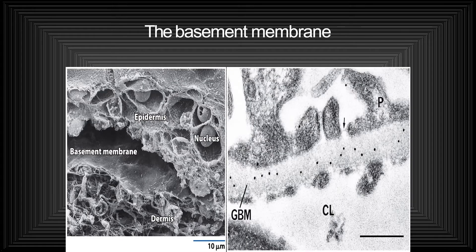It also serves as a substratum for cell migration and forms a barrier to macromolecules, meaning very large molecules cannot enter or exit through the cell plasma membrane. In this slide showing the basement membrane ultrastructure — an electron microscopic structure — you can clearly see the epidermis with nucleus, the basement membrane below, and the dermis. The structure is 10 millimicrons in diameter.